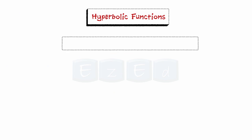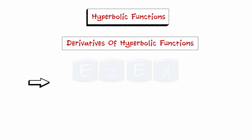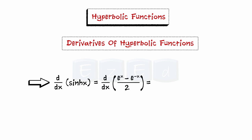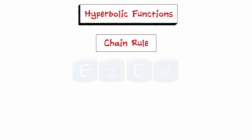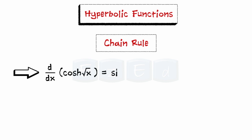Let us look at the derivatives of the hyperbolic functions — they are easily computed. For example, the derivative of sinh x equals the derivative of (e^x − e^(−x)) / 2, which equals (e^x + e^(−x)) / 2, which is cosh x. Any differentiation rule can be combined with the chain rule; for instance, the derivative of cosh(√x) = sinh(√x) · (1 / 2√x).